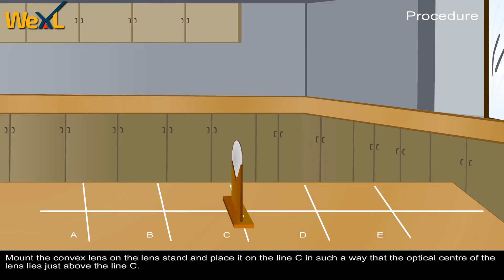Mount the convex lens on the lens stand and place it on line C in such a way that the optical centre of the lens lies just above line C.